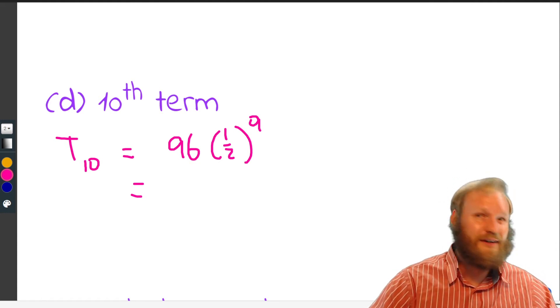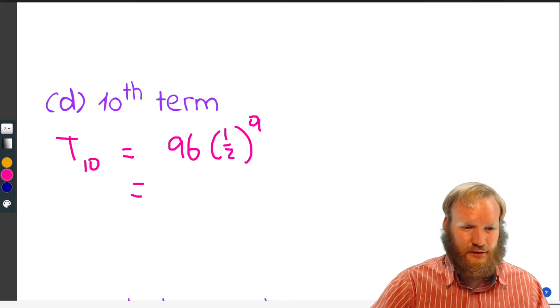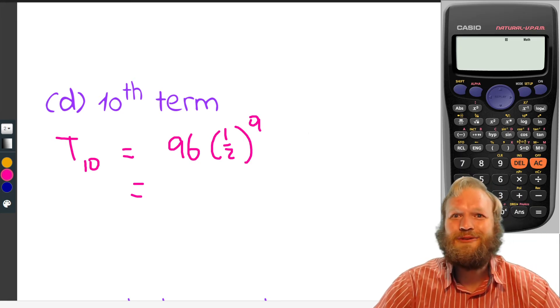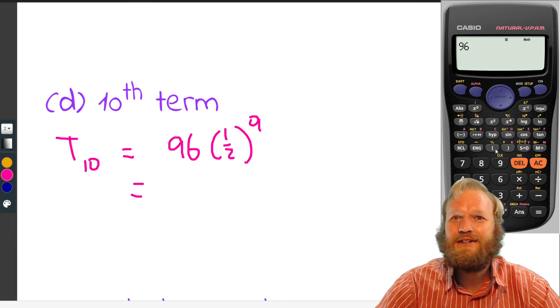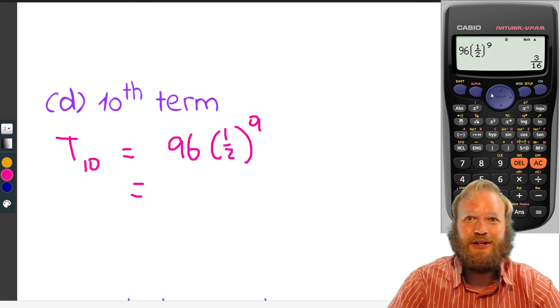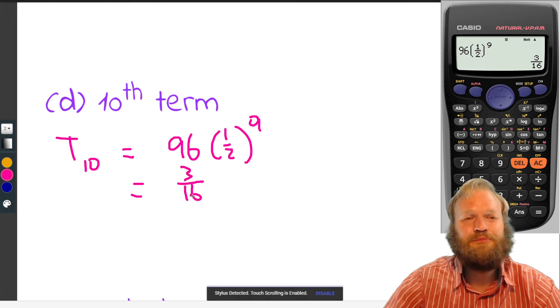There we go. Calculator. Calculator to the rescue. Okay. So we got our calculator here. And we got 96 times one over two to the power of nine. We got there three over 16. So cool. I'm going to add that in here. Three over 16.